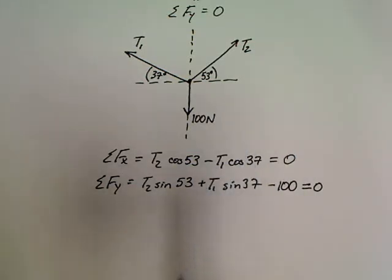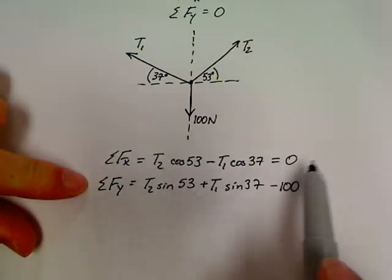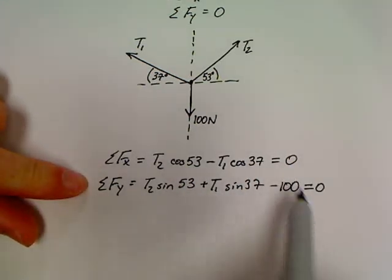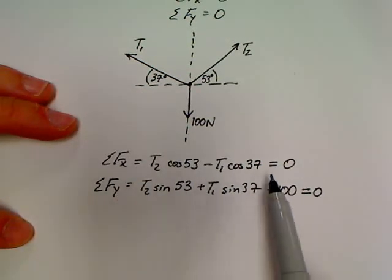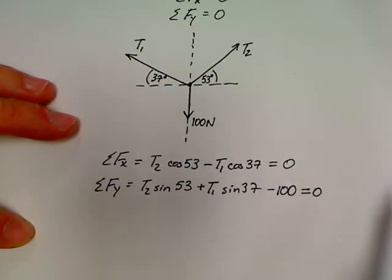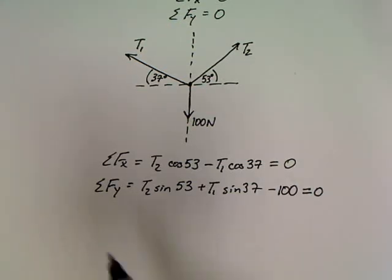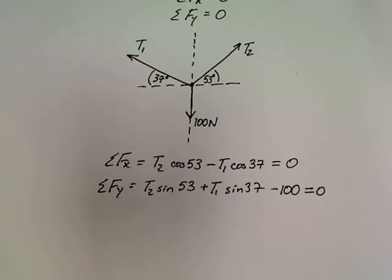The only thing that changes from this problem to unit 4.3 with the connected objects is in these problems, your sum of the forces are both equal to zero. When you get to the connected object problems, one of these two will be equal to an MA on those problems. All right. Believe it or not, the physics is over. That was it for the physics in this problem. The rest of this problem is going to be math. Now, if you're getting scared about the math in this one confusing you, let's take a second and kind of break it down.